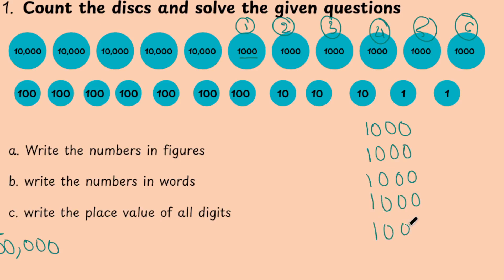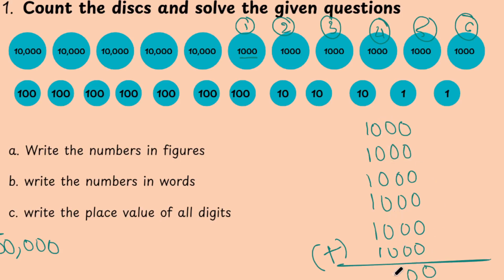3, 4, 5 and 6. Now what we are going to do is add all of these. As I said, write 0, 0, 0. How many ones are there? 1, 2, 3, 4, 5, 6. That gives 6,000. So how many thousands are there? 6,000.